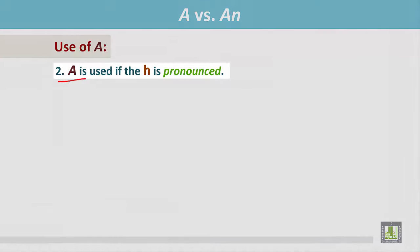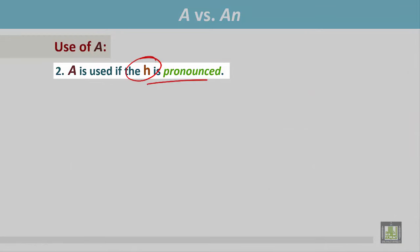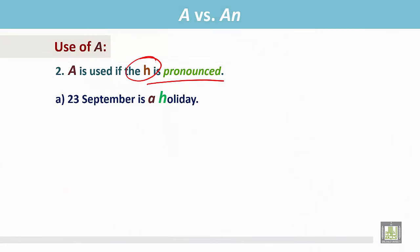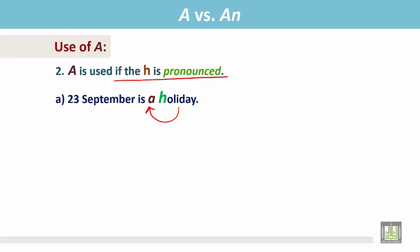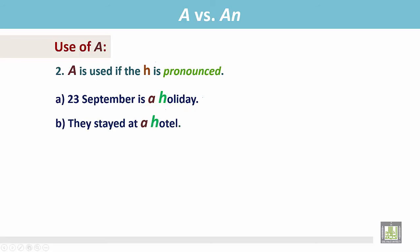A is used if the H is pronounced — the word begins with H and it is pronounced. 23rd September is a holiday. The word holiday begins with H and this H is pronounced, so we write A before the word holiday. They stayed at a hotel. The word hotel begins with the letter H and it is pronounced, so we write A before the word hotel.